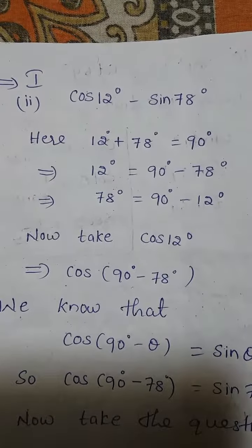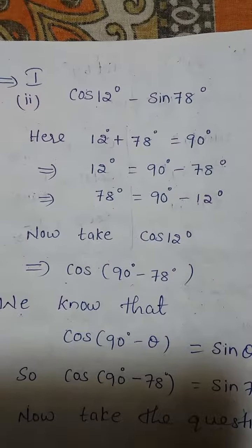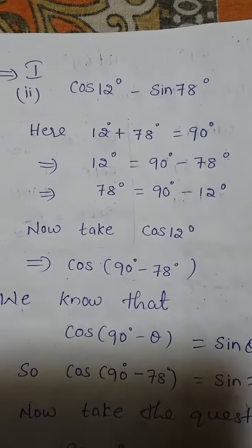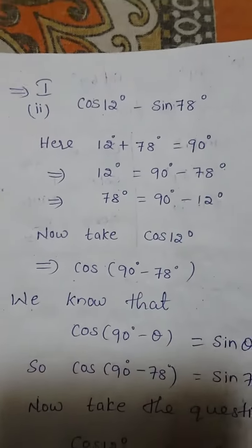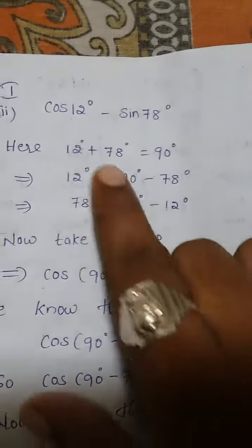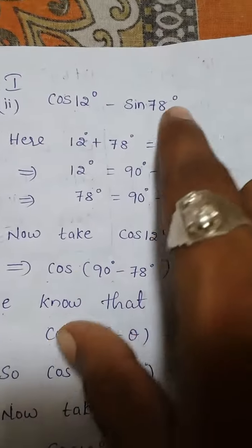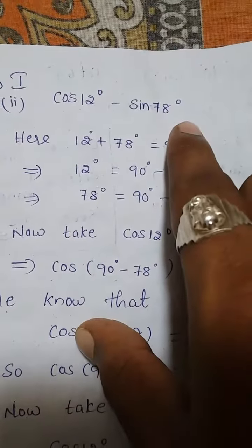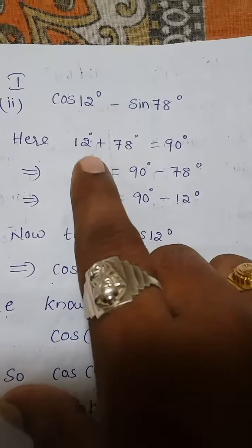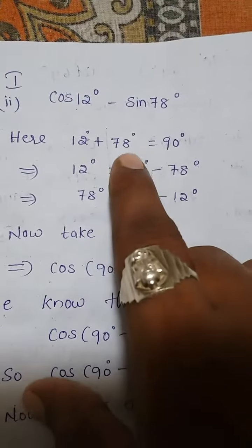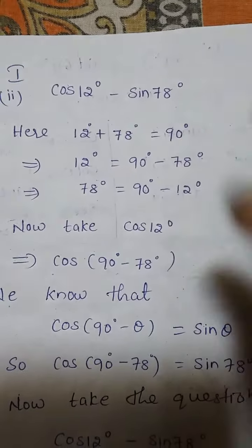Question number 2, page number 288, Exercise 11.3, first bit, second question. That is cos 12 degrees minus sin 78 degrees. Adding these two — 12 degrees plus 78 degrees together — it is 90 degrees.